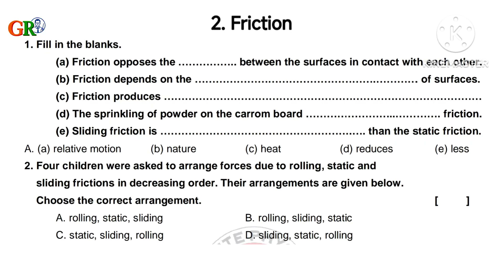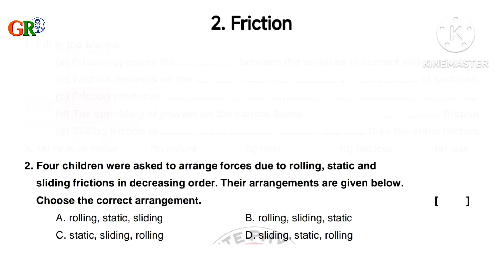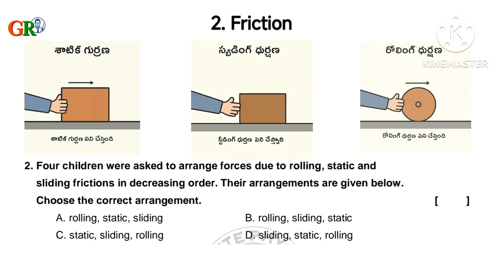Second question: Four children were asked to arrange forces due to rolling, static, and sliding frictions in decreasing order. We know that static friction is more than sliding and rolling frictions, and rolling friction is less than static and sliding frictions. So the correct arrangement in decreasing order is option C: static friction, sliding friction, rolling friction.